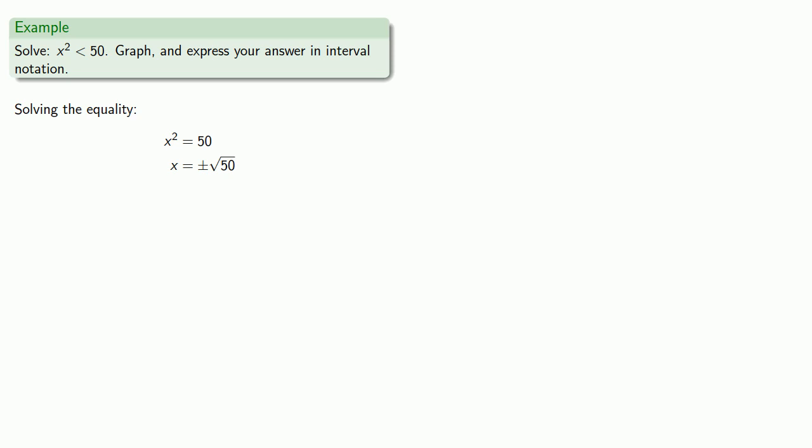Now, we do want to graph it, so here's an important idea. Plot first, then label. In other words, don't spend a lot of time trying to figure out exactly where square root of 50 is on the number line. That's because our number line is meant to organize our answer, but is not the answer itself.